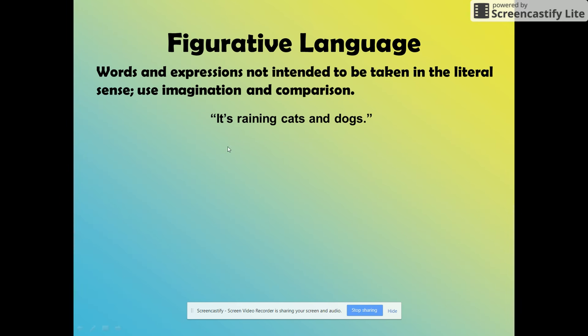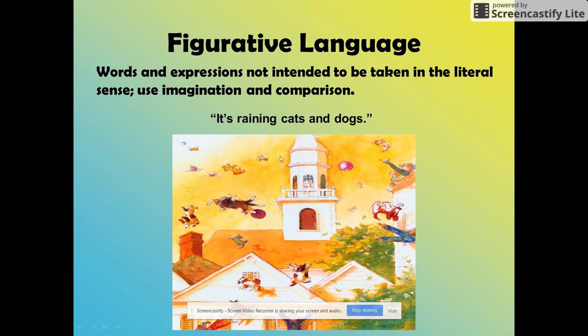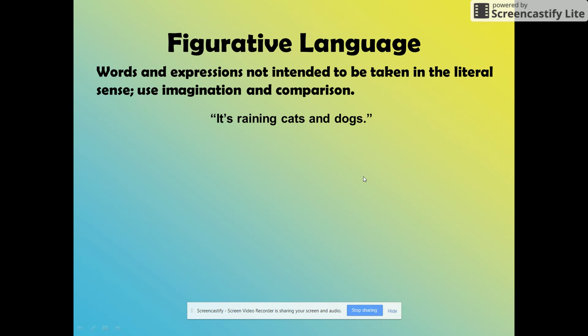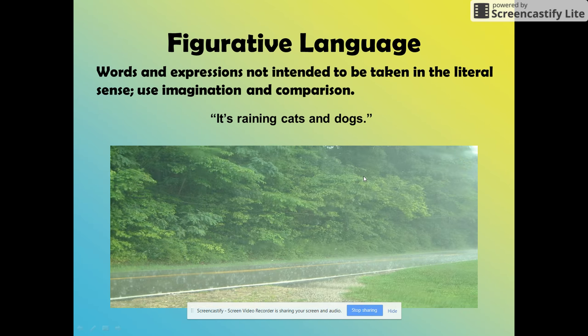So for example, 'it's raining cats and dogs.' It's not literally raining cats and dogs, but it lets us know that it's raining quite hard outside.